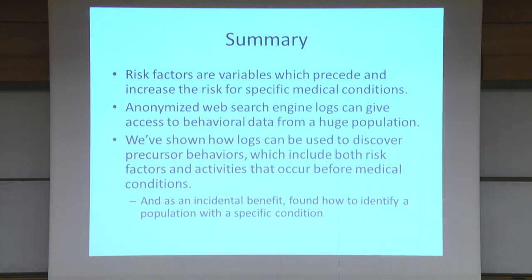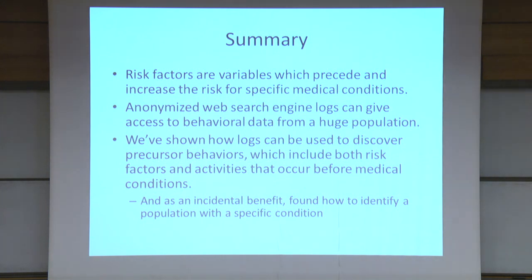To summarize: we're interested in risk factors, but we can actually only find precursors of medical conditions. We're using these anonymized search logs to look for them. The advantage is that we have a huge population that we can look at, and we can look at a large set of medical conditions and precursor behaviors almost without any additional cost. And as an added benefit, we can identify a population with a specific medical condition, which might be useful for other research as well. Thank you.